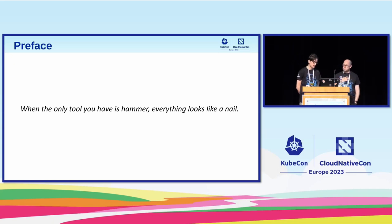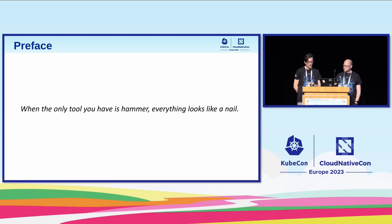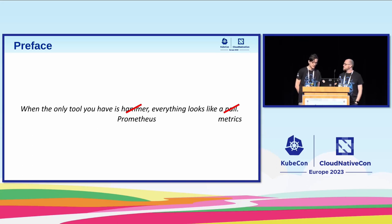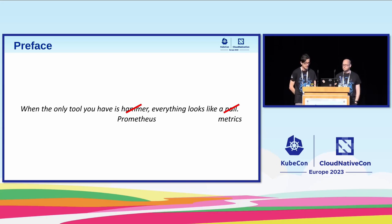Before starting, we want to introduce this talk with a quote: when the only tool you have is a hammer, everything looks like a nail. Because we use Prometheus almost on a daily basis, we should probably change it to: when the only tool you have is Prometheus, everything looks like a metric. This summarizes what we want to propose — to use Prometheus for something it wasn't meant to be used for, and try to leverage the information we have when monitoring a Kubernetes cluster for security purposes.